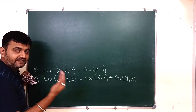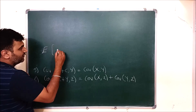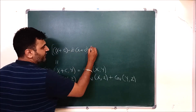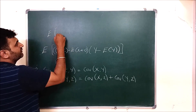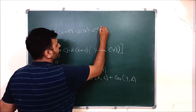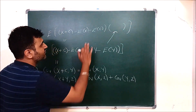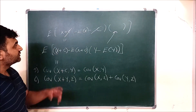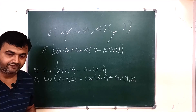The fifth property is translation invariance: Cov(X+c, Y) = Cov(X,Y). By definition, we compute E[(X+c - E[X+c])(Y - E[Y])]. Since E[X+c] = E[X] + c, the c terms cancel: (X+c - E[X] - c) = (X - mu_X). So we are left with E[(X - mu_X)(Y - mu_Y)], which is Cov(X,Y). The constant c disappears.